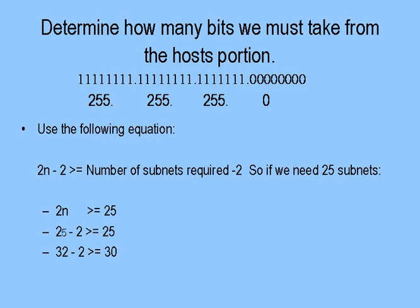Now, determine how many bits we must take from the host portion. I told you that I needed 25 subnets. Using the power of 2, what is the first increment we can work with? 2 to the 5th power gives me a total possibility of 32 subnets. Can't use 2 to the 4th power — it only gives me 16. Since 25 falls between 16 and 32, I have to go up to the next higher value, which is 2 to the 5th power equals 32. Subtract two, and that gives you a total possibility of 30 good subnets.